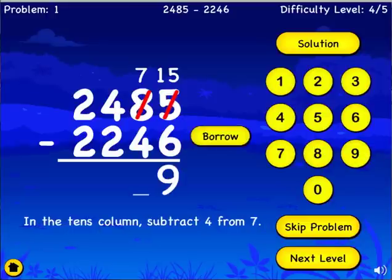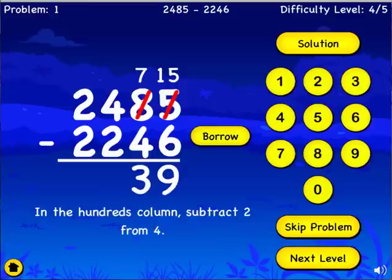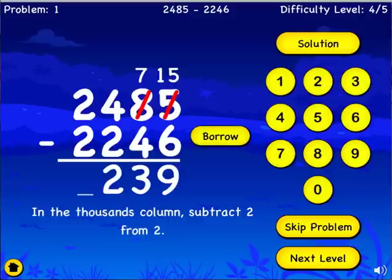In the tens column, subtract four from seven. In the hundreds column, subtract two from four. In the thousands column, subtract two from two. Mind-blowing!